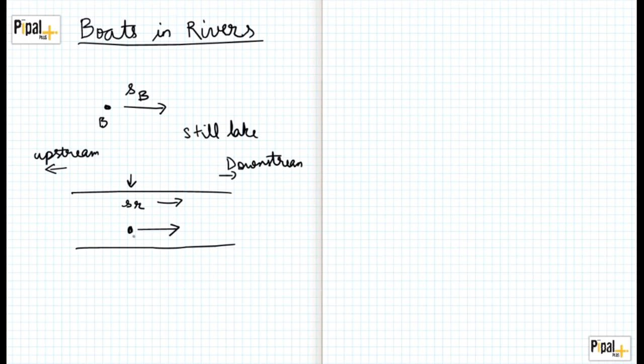If this boat which can travel in still water at a speed of SB moves downstream, then to an observer on the shore, the speed of the boat is going to be SB plus SR, because the speed of the river gets added to the speed of the boat and the boat now actually moves faster than it would in still water.